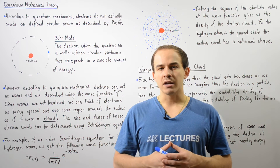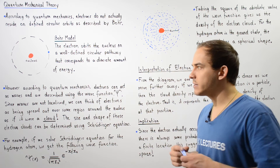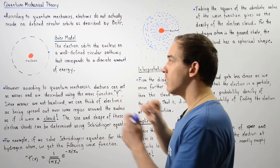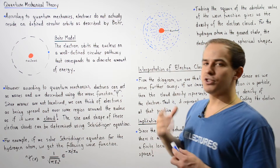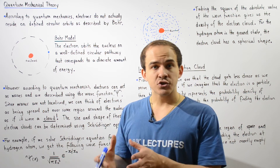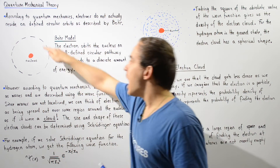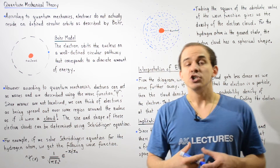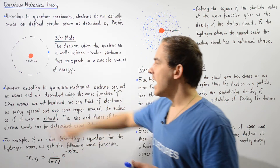According to the Bohr model, if we take the simplest atom — for example, the ground state hydrogen atom — the proton and the neutron within that atom are found at the center in a localized region known as the nucleus. According to the Bohr model, which treats the electron as a particle, the electron orbits the nucleus on a well-defined circular pathway corresponding to a quantized, discrete amount of energy.